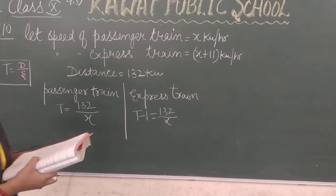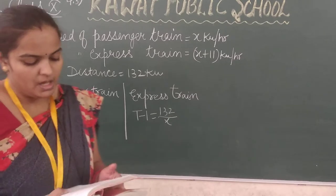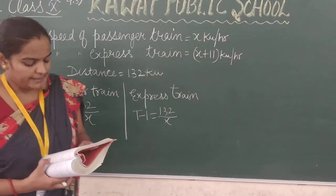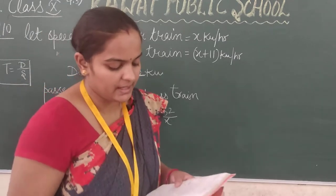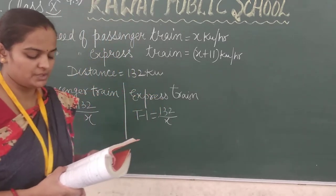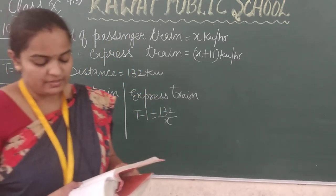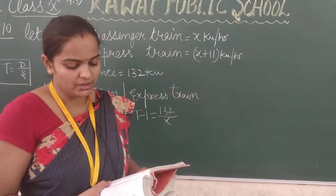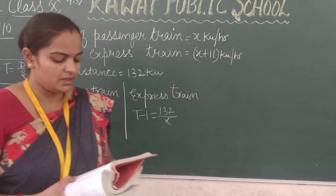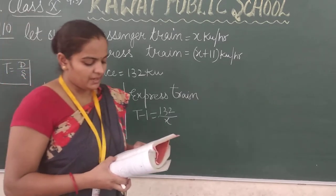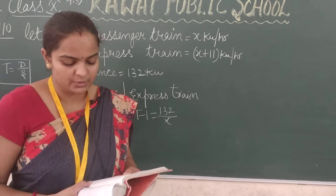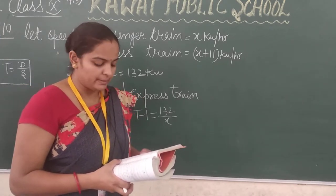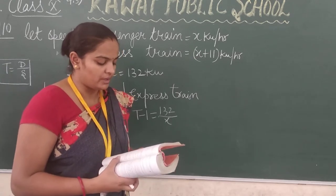Let's start with question number 10 of exercise 4.3. An express train takes one hour less than a passenger train to travel 132 km between Mysore and Bangalore, without taking into consideration the time they stop at intermediate stations. If the average speed of the express train is 11 km per hour more than the passenger train, find the average speed of the two trains.